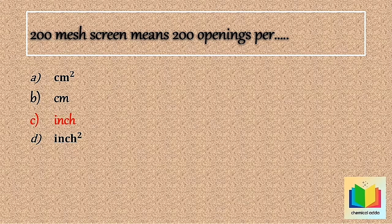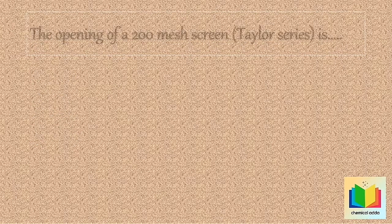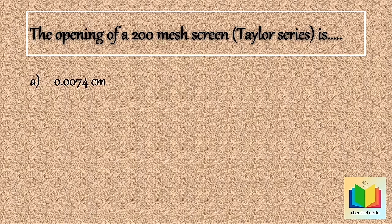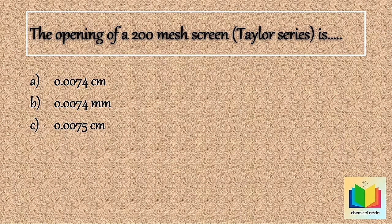Next question: The opening of a 200 mesh screen in the Tyler series is — Option A: 0.0074 centimeter. Option B: 0.0074 millimeter. Option C: 0.0075 centimeter. Option D: 74 millimicrons.